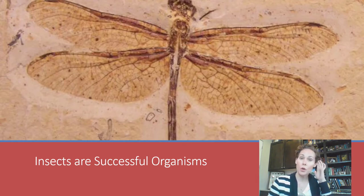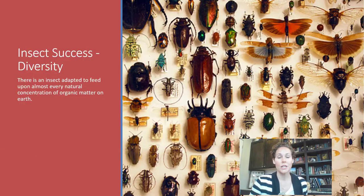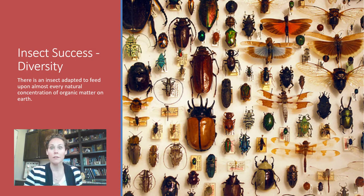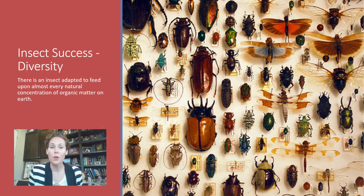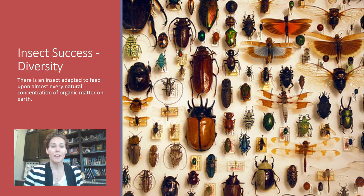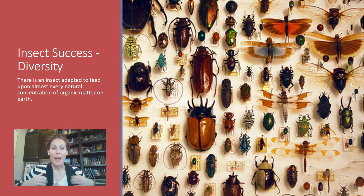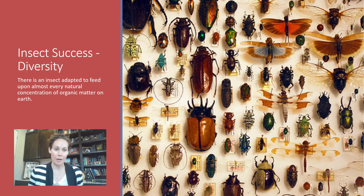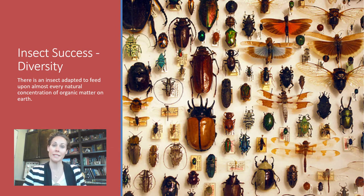Insects are incredibly successful organisms. They've been around for so many years, and the reason for their success is because they are incredibly diverse. This picture shows many different insects, some very different from one another, yet they're all still insects — that diversity is one of the most amazing things about them. Insects are also adapted to feed upon almost every natural concentration of organic matter on Earth, so they are found everywhere. They feed on fungal material, mold, decaying organic matter, dying plants, dead bodies, live trees, dead trees — anything you can imagine. There is an insect that specializes in feeding on it.